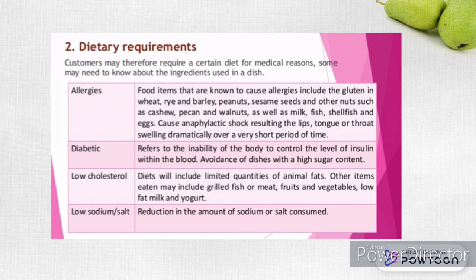The second influence is dietary requirements. Customers may require a certain diet for medical reasons and need to know about ingredients used, for example people with allergies, diabetes, low cholesterol, or low sodium. Items known to cause allergies include gluten in wheat, rye and barley, peanuts, sesame seeds, nuts such as cashew, pecan and walnuts, as well as milk, fish, shellfish, and eggs. These can cause anaphylactic shock, resulting in swelling of the lips, tongue, or throat over a very short period of time.